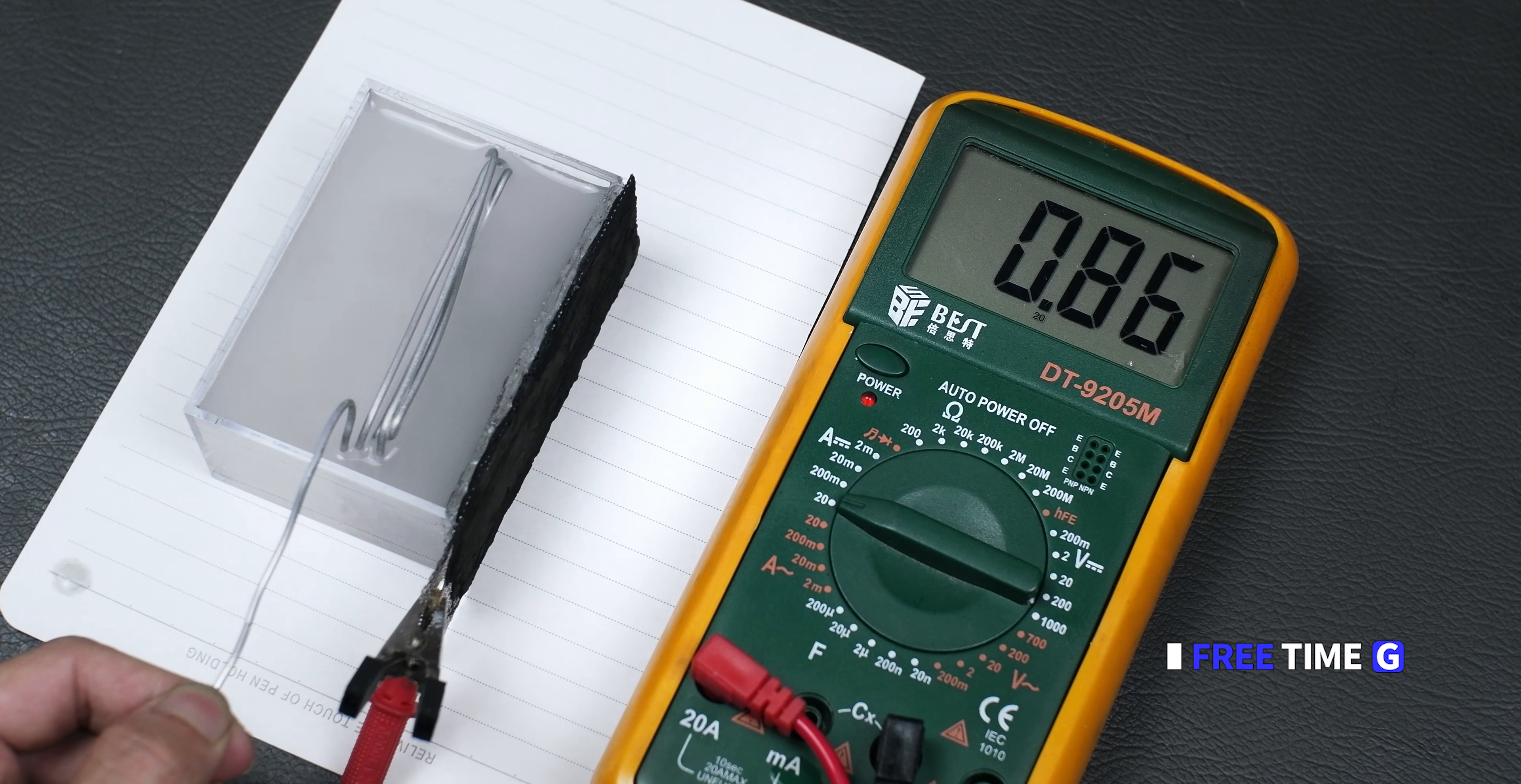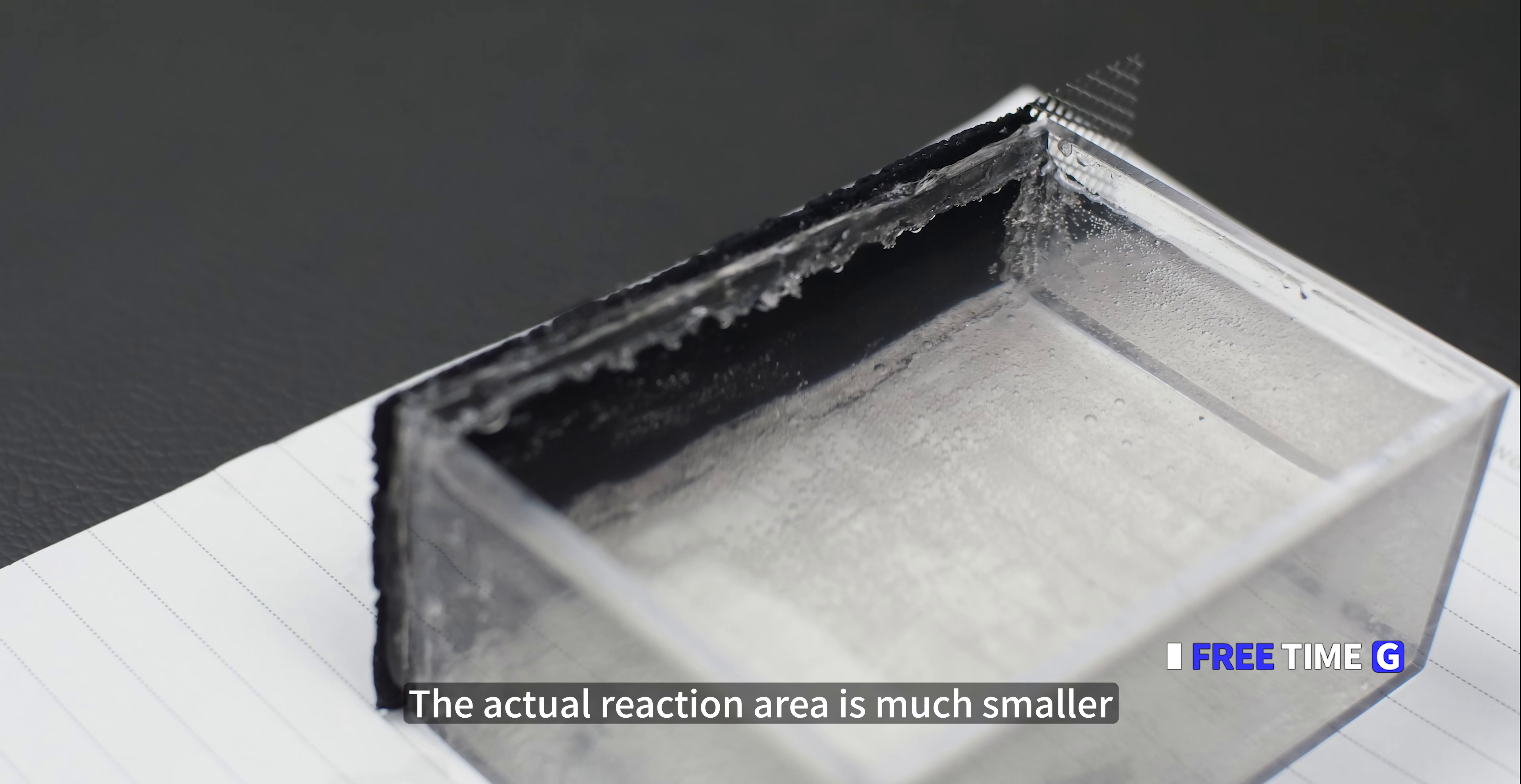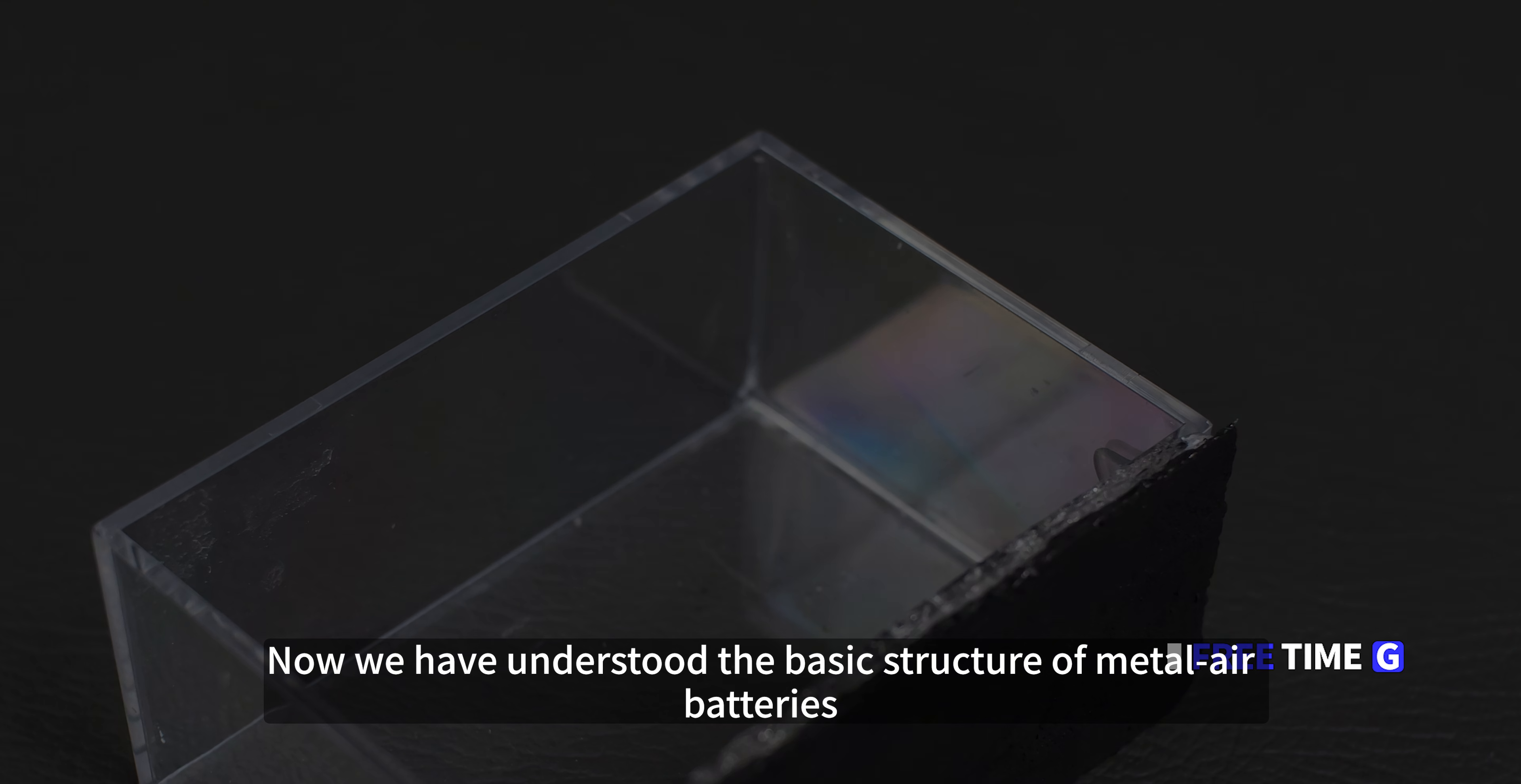Slowly approach. The maximum current is close to 1.2 amperes. This effect is obvious, and the current can be stable in this state. Voltage around 1.3 volts. The size of this air electrode is shown in the picture. The actual reaction area is much smaller. Its current density is about 40 milliamps per square centimeter. An area the size of a notebook like this can output 12 ampere current. If it is due to a layer structure mode, the current can reach more than 20 amperes.